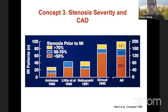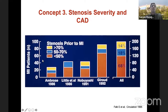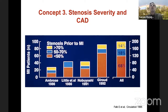The third concept: stenosis severity. We all know — from work by Ambrose at Mount Sinai and others including Valentin Fuster — that the majority of events actually occur in non-significant coronary lesions. So going after significant stenosis alone is the wrong approach. You have to treat the non-significant stenosis. How? Through prevention — treating with statins, SGLT2 inhibitors, GLP-1 agonists, et cetera.